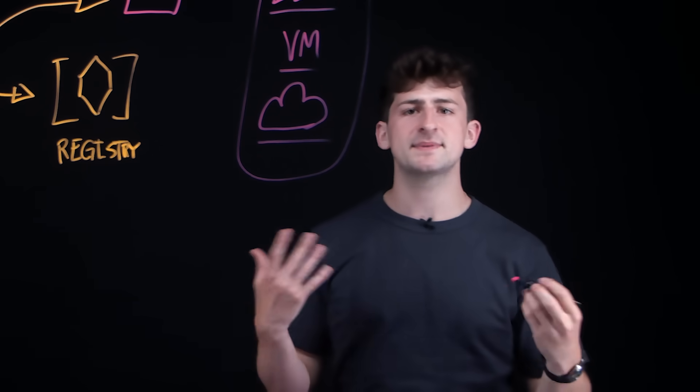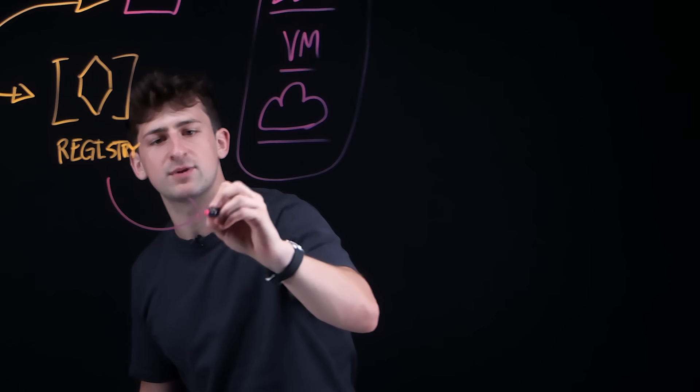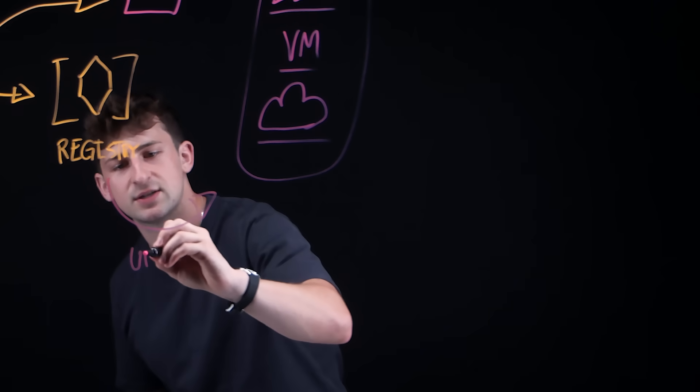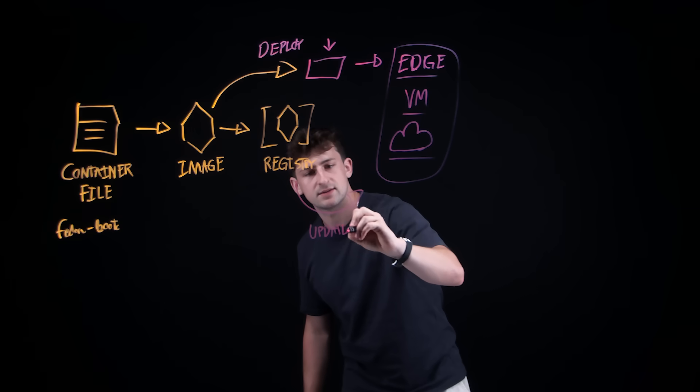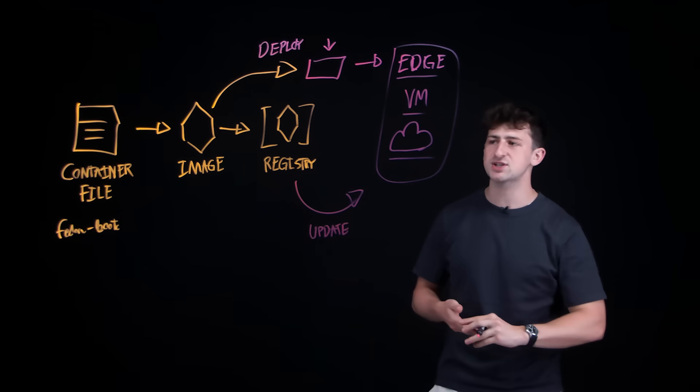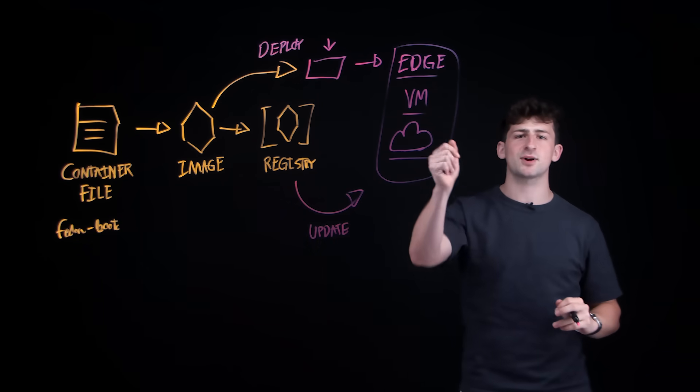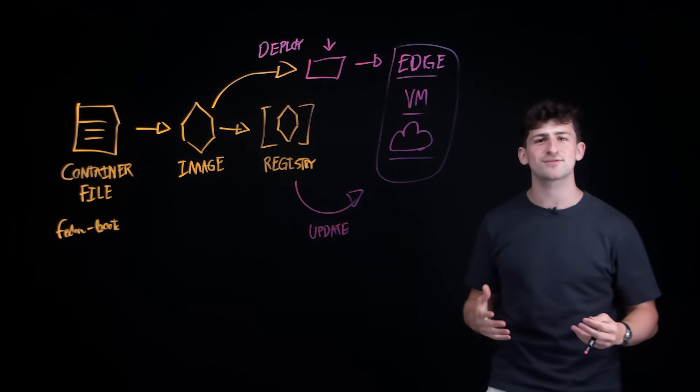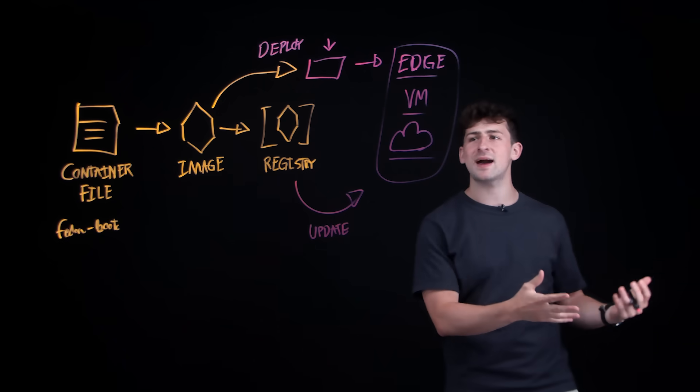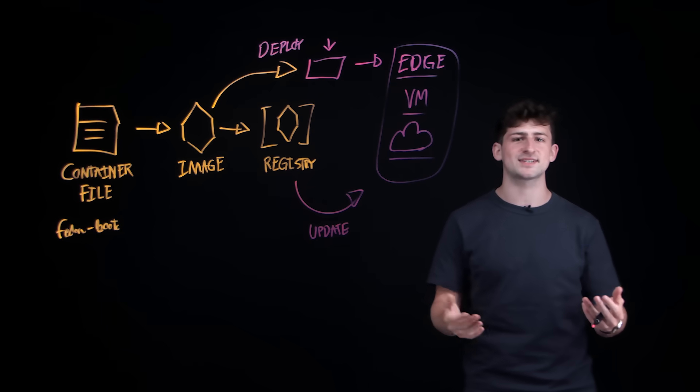And when we actually have an update to make, what we're going to do is actually rebuild the image and push it to the registry. So once we have that image up in the registry, we would essentially pull it down from our system of choice. And this allows for automatic updates and rollback capabilities that are similar to an appliance.